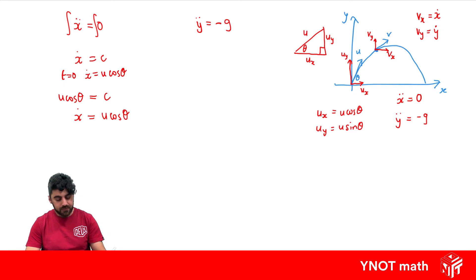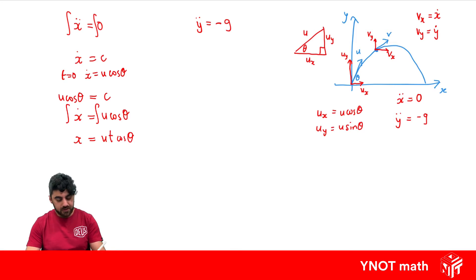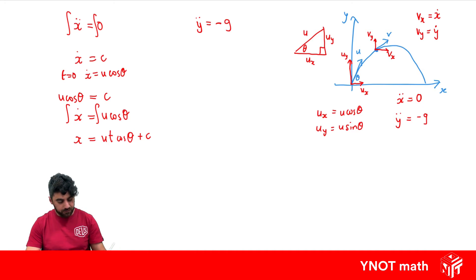Integrating x-dot again with respect to time gives us x. Integrating u cos theta gives ut cos theta, plus a constant. Using initial conditions: when t equals zero, x equals zero, so c equals zero. Therefore the final displacement in the x direction is x equals ut cos theta.